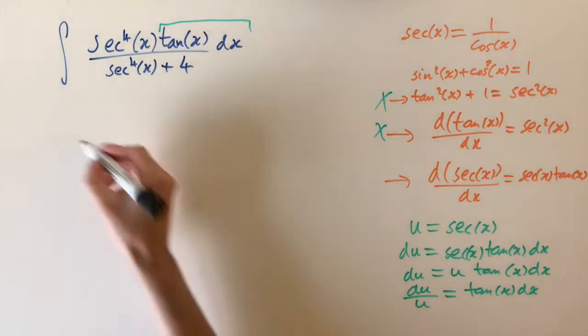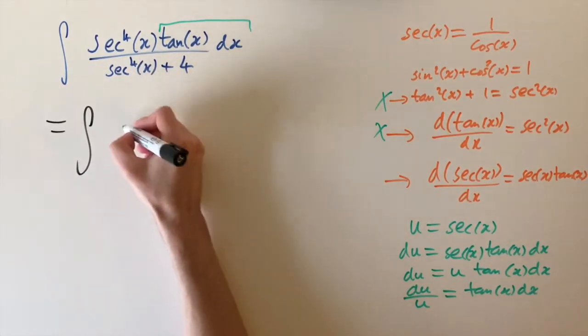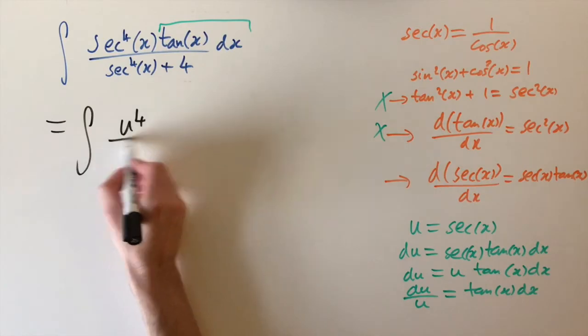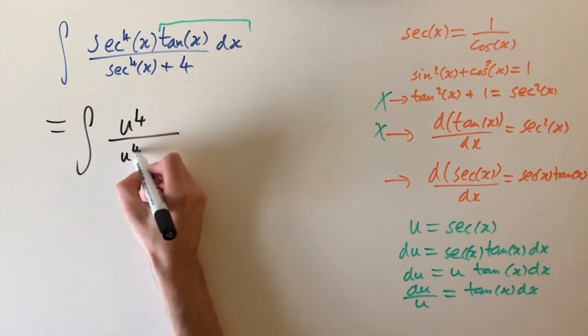So if we use a substitution, this is going to give us the integral of u to the power of four. That's just replacing sec of x by u. And then again, on the denominator, we have u to the power of four plus four.